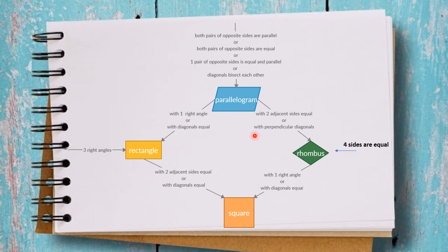In your proof, you may state each step: first it is a parallelogram, then add something to say it is a rhombus, then add something to say it is a square. Or you can state it directly — for example: both pairs of opposite sides are parallel, adjacent sides are equal, and there is a right angle, therefore it is a square. You can write out the steps you passed through or simply state the method you used.